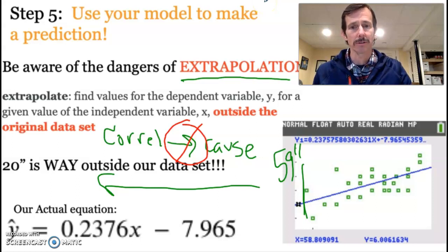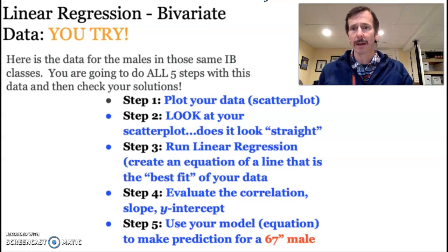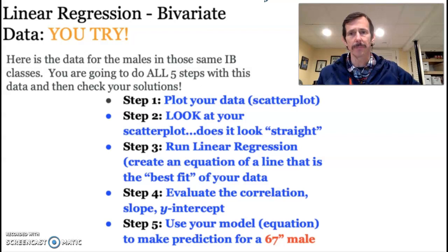All right, so now you're going to try. You're going to try it with the data on the males from those same two classes, and you are going to do all five steps. You're going to plot it. You're going to look at it and make sure it's straight. You're going to do linear regression. You're going to evaluate the three key values that are given with linear regression, and then you're going to use your model to predict the shoe size of a male that is 67 inches.